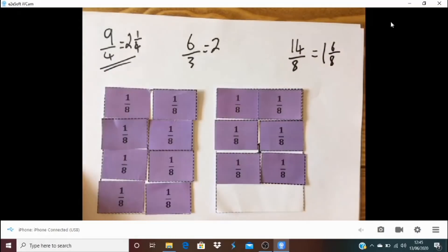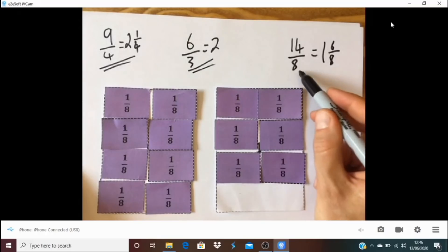And so here I have 1 hole and 6 eighths left. So 9 quarters was the most. Then it was 6 thirds. And finally, 14 eighths.